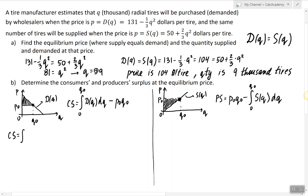So consumer surplus will be equal to the integral from 0 to 9 of 131 minus one-third q squared dq minus p0 times q0. In this case we're looking at everything happening at the equilibrium. So p0 is 104, q0 is 9.